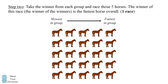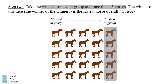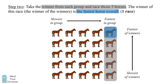Now we are going to take the winner from each group and race those five horses — the horse on the far right-hand side of each group. The winner of this race, the winner of the winners, will be the fastest horse overall. I'm going to draw this so that the slowest of the winners is on the bottom and the fastest is on the top, rearranging the groups as necessary. We have now identified the fastest horse overall, since it beat every other horse within its group and the fastest horse in every other group.